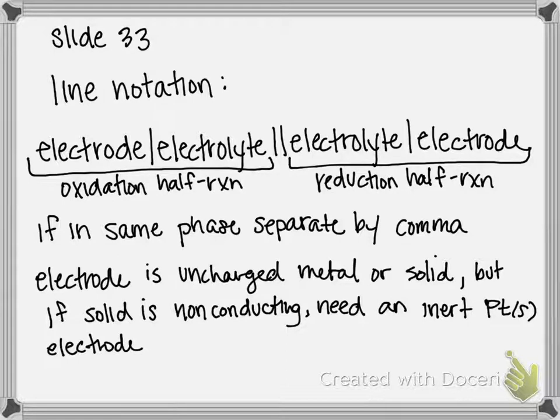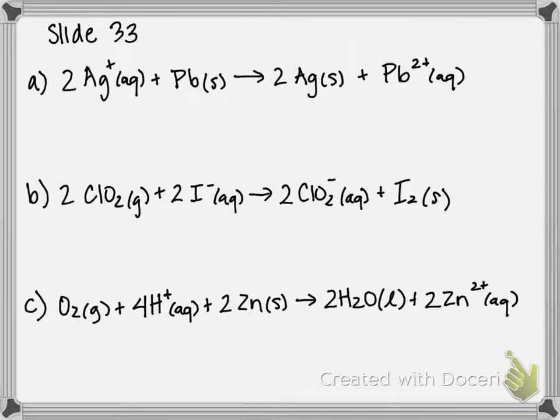Then on the other side, we have the electrolyte and electrode from the reduction half reaction. Electrolyte being aqueous, liquid, or gaseous, and then separating line for showing electrode in a different phase. If an electrolyte or an electrode are in the same phase, you can just separate them by a comma. The little single line is just representing different phases. All right, so the three reactions we're going to be looking at are written on this slide.